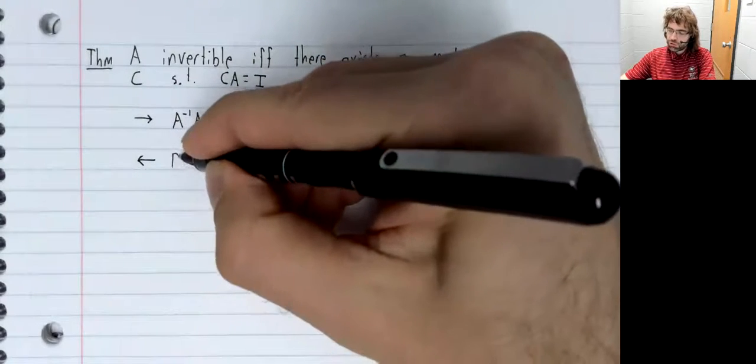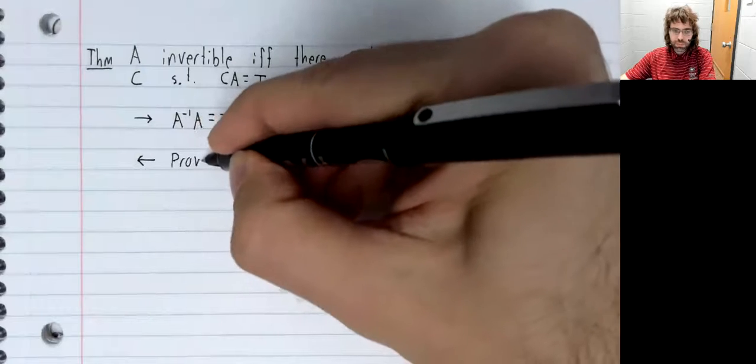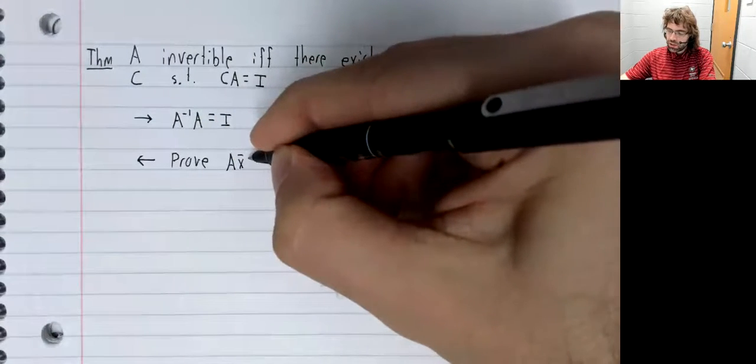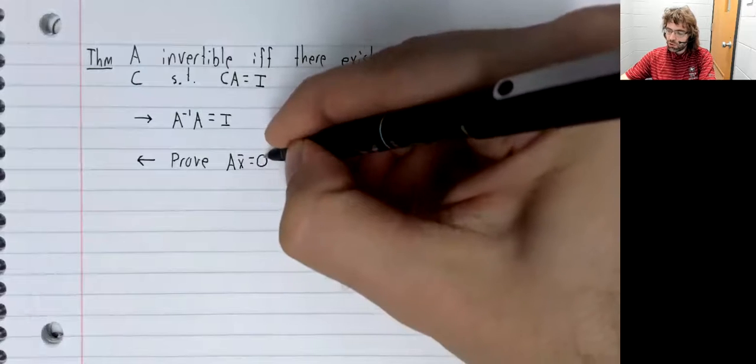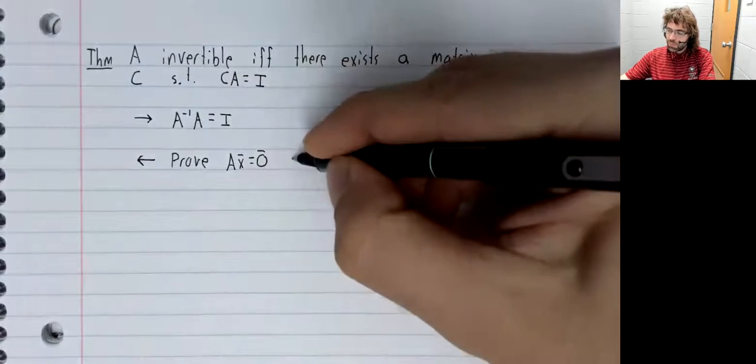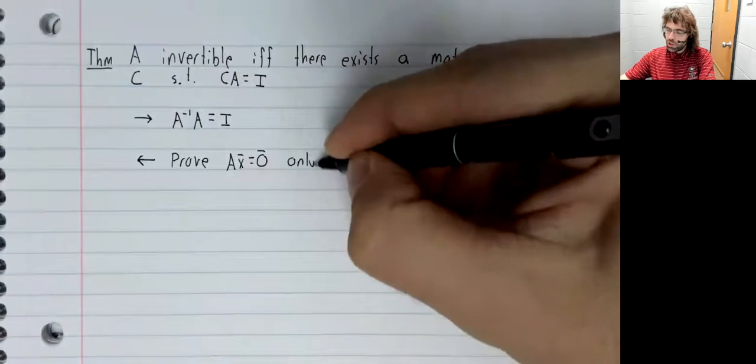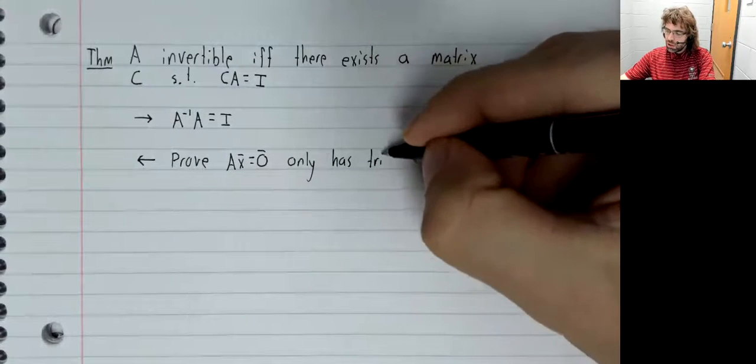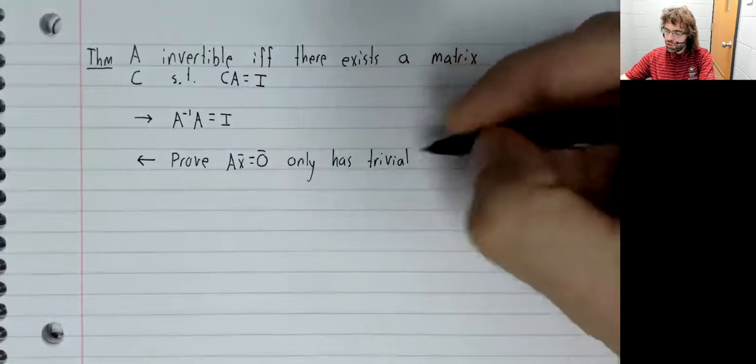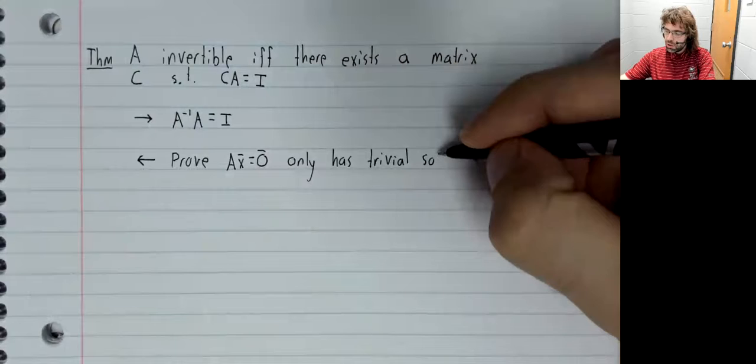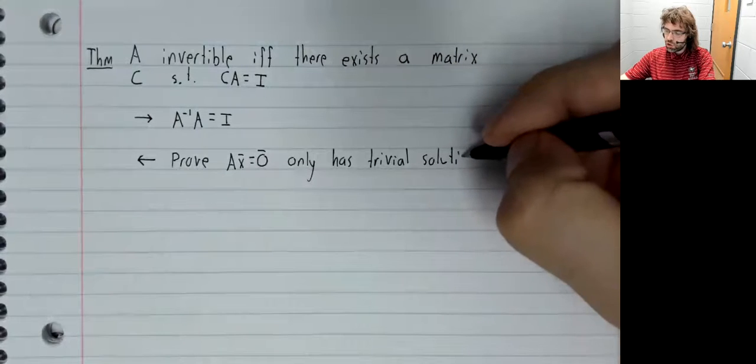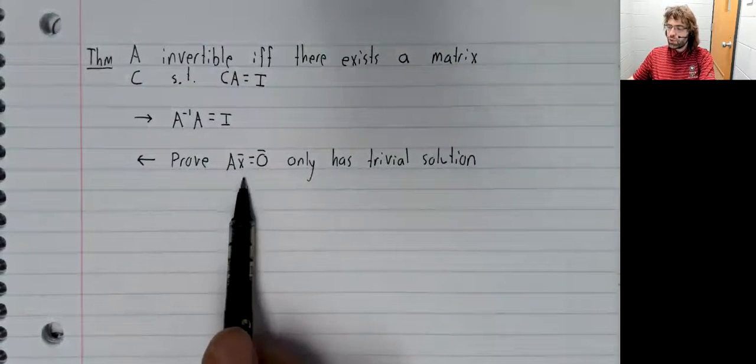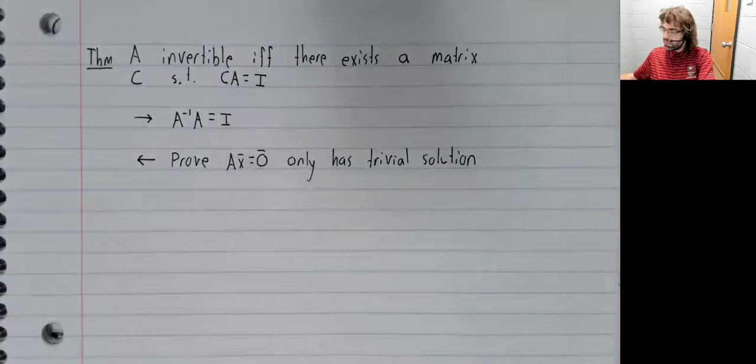We're going to prove that A x equals zero only has the trivial solution. And if we can prove this statement,